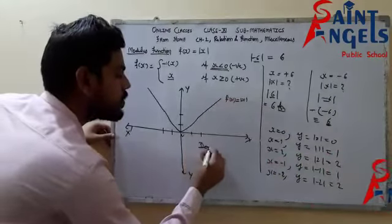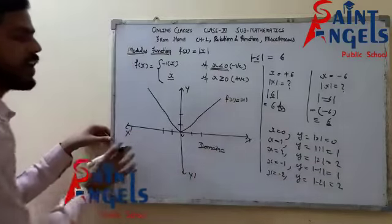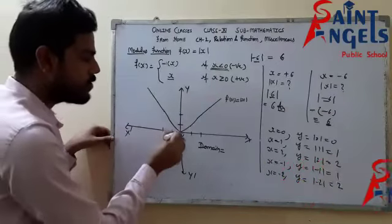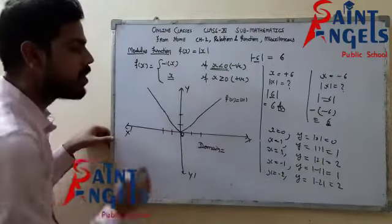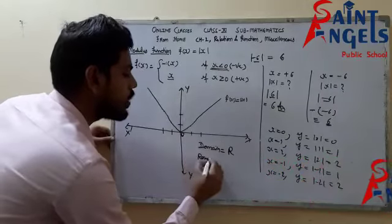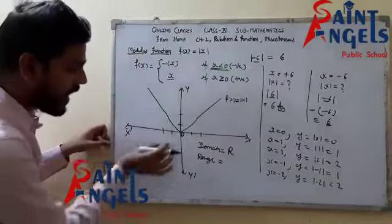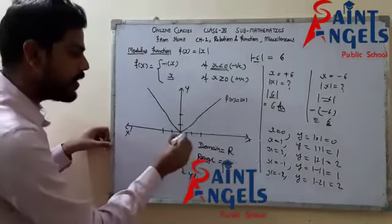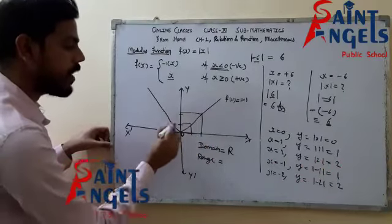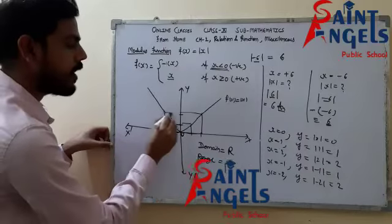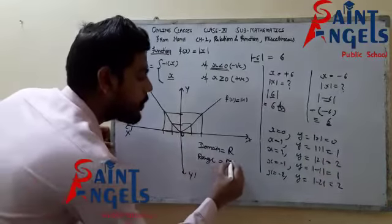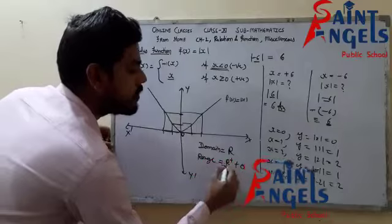Now what would be the domain of this function? Domain is all values of x at which the function is defined. I can take all negative numbers, I can take 0, and I can take all positive numbers. So the domain of the function would be the entire set of real numbers. Now for the range: am I getting any negative value of y? For positive x, y is positive; for negative x, y is also positive. I am not getting any negative value of y. So the range would be all real positive numbers plus 0, which is [0, ∞).